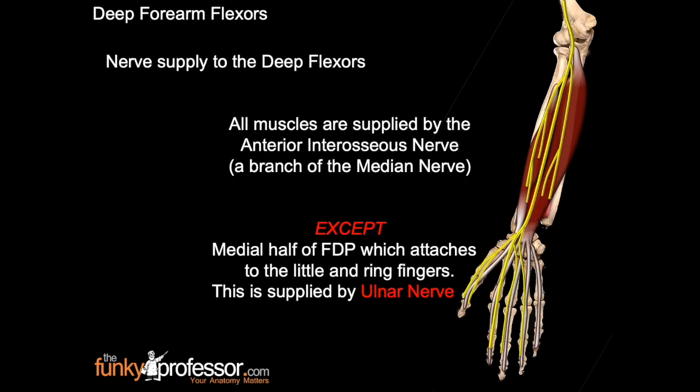All muscles of the deep flexor compartment are supplied by the anterior interosseous nerve, which is a branch of the median nerve, except for the medial half of flexor digitorum profundus. The tendons of the medial half of flexor digitorum profundus attach to the little and ring fingers, and this part of the muscle is supplied by the ulnar nerve.